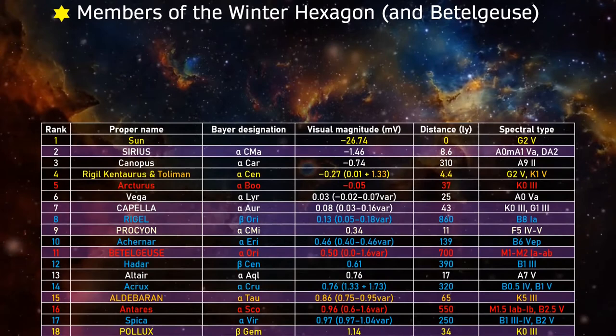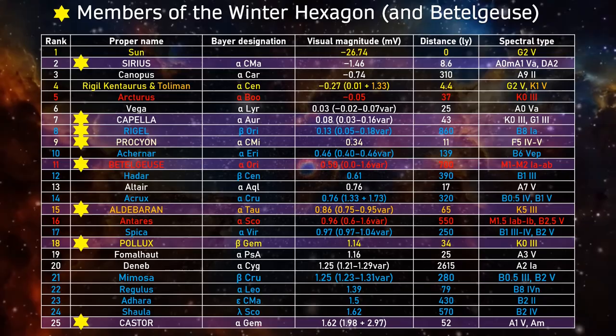If we include Betelgeuse in the middle, it's really quite a stunning coincidence that half of the brightest stars in our skies are all in close proximity to each other.